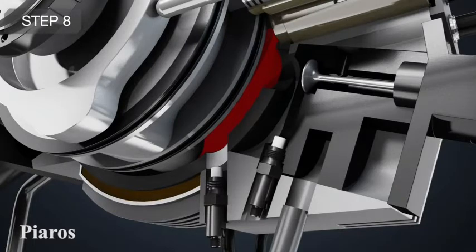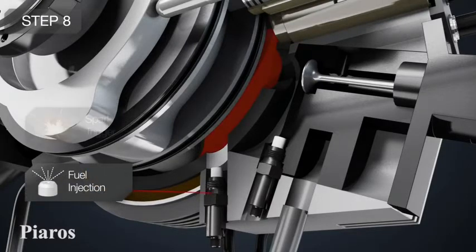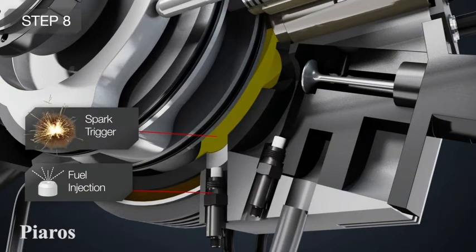When the lobe of the central rotor uncovers the second injector, the fuel is sprayed and it lights up due to the high temperature.